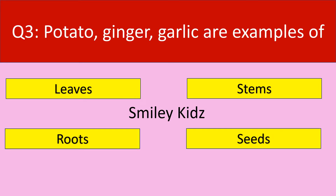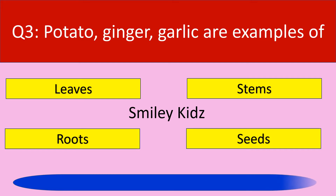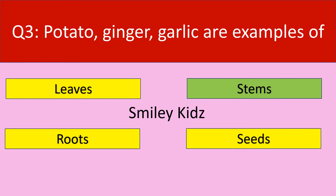Question number 3. Potato, ginger, garlic are examples of. Options are leaves, stems, roots, and seeds. Your time starts now. The correct answer is stems. Potato, ginger, garlic are examples of stems.